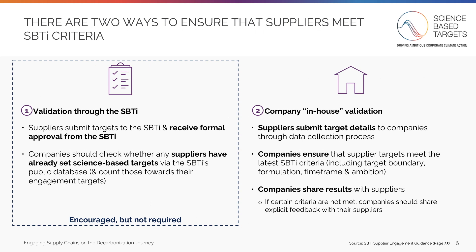Once your suppliers have set their targets, you must ensure that those targets meet SBTi criteria. There are two fundamental ways to do this. The first is for your suppliers to validate their targets through the SBTi — this route is encouraged, but not required. In this route, your suppliers would submit their targets to the SBTi and receive a formal approval. Before getting started, you should check whether any of your suppliers have already set science-based targets via the SBTi's Public Companies Taking Action Dashboard, which is linked in the description below. If some of your suppliers have already set SBTi-approved targets, you can count those against your supplier engagement target.